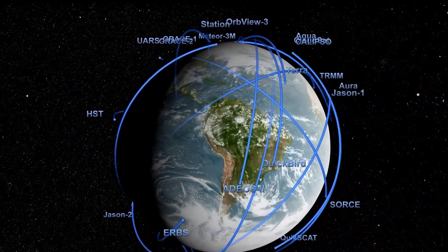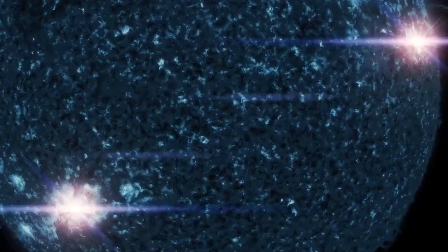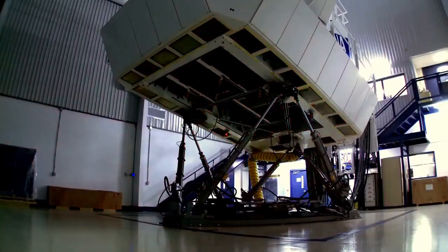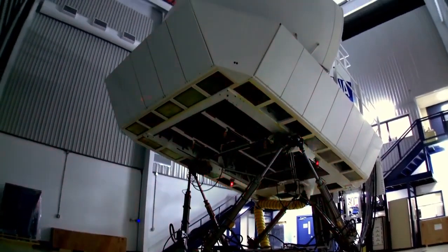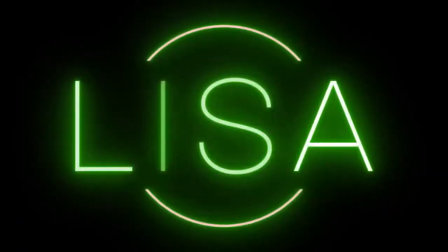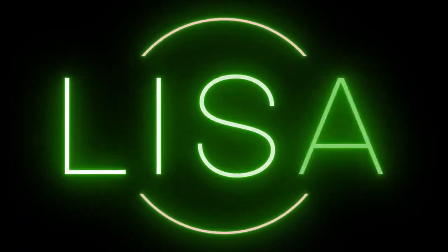The JWST is the most powerful and complex telescope ever built. It is a joint project of NASA, the European Space Agency (ESA), and the Canadian Space Agency (CSA). Launched on Christmas Day 2021, it has been orbiting the sun about a million miles from Earth, capturing stunning images and data of celestial objects near and far.